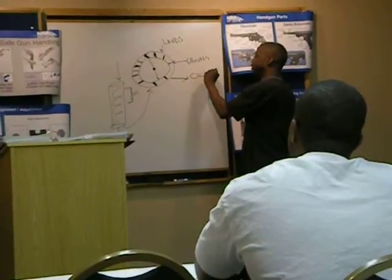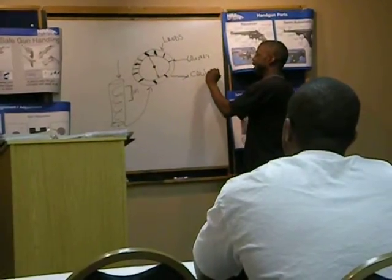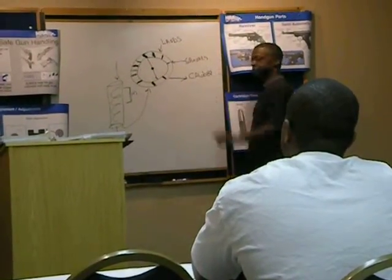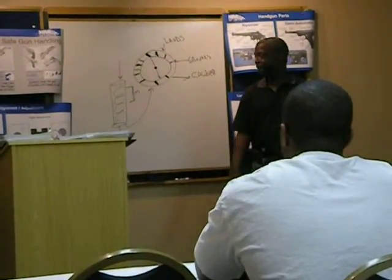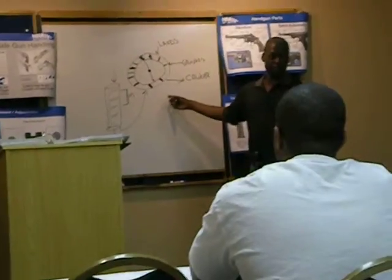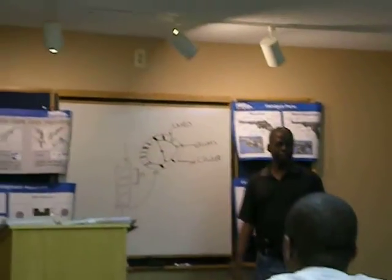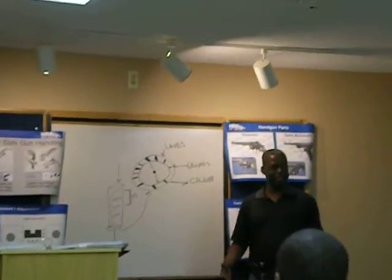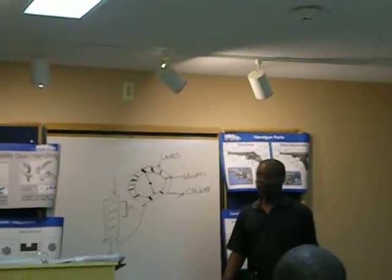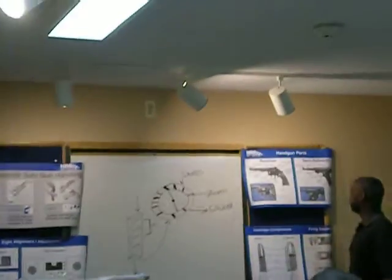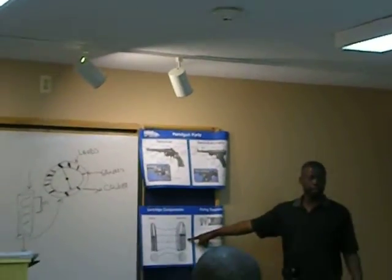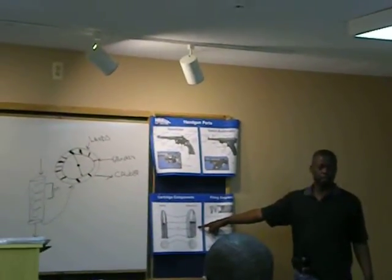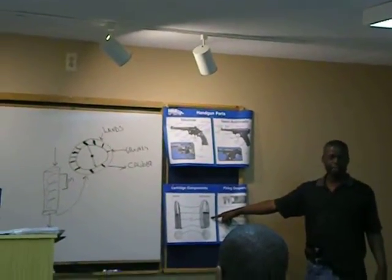So essentially, caliber gives you some idea of a measurement of the diameter of a barrel. It gives you some idea of the size of the round.